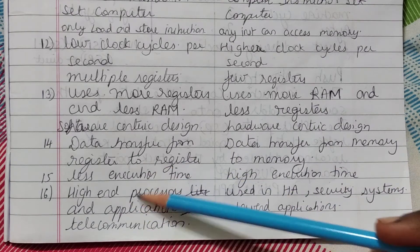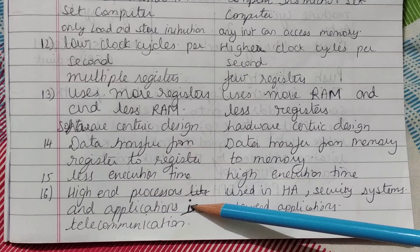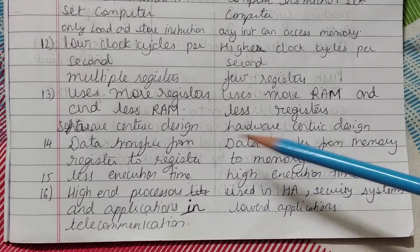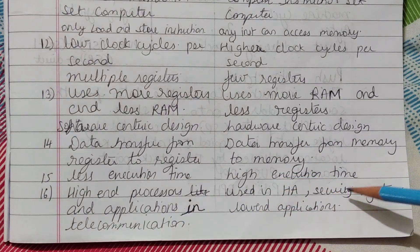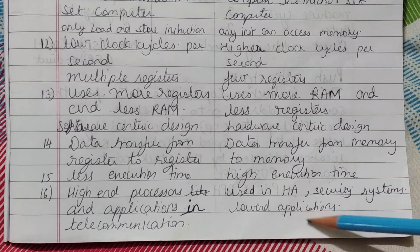RISC is used in high-end processors and applications like telecommunications. CISC is used in home automation, security systems, and other low-end applications.